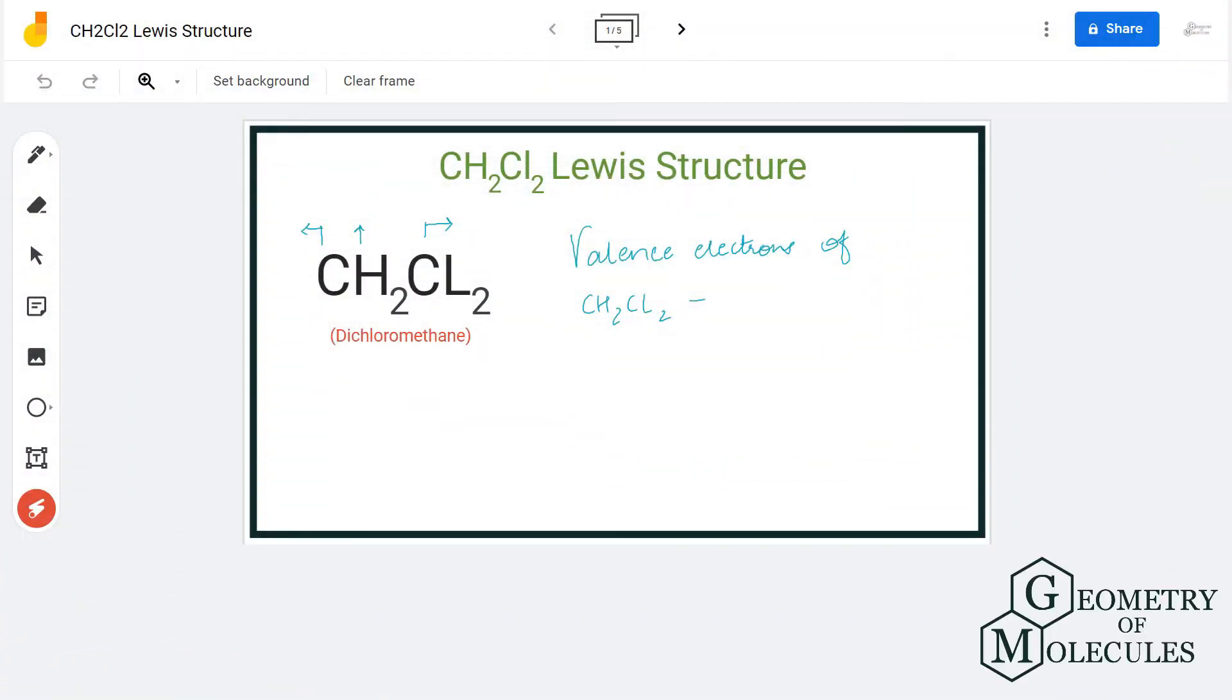Hi guys, today in this video we are going to look at the Lewis structure for CH2Cl2, which is the chemical formula for dichloromethane. To understand its Lewis structure, we will first go through its total number of valence electrons.